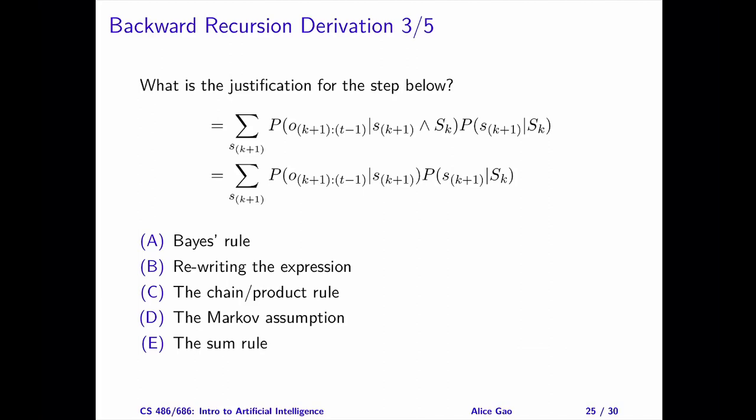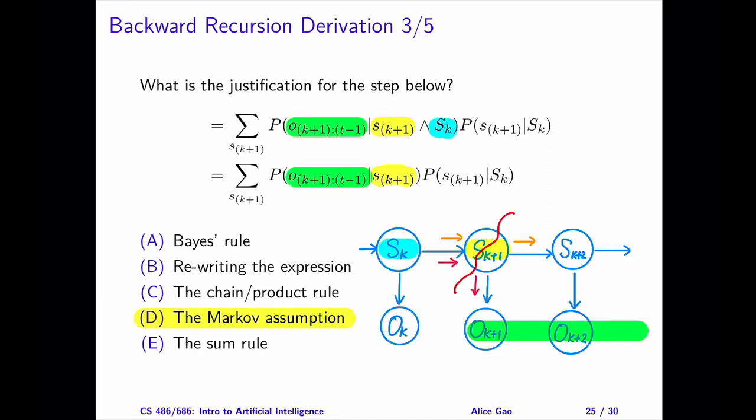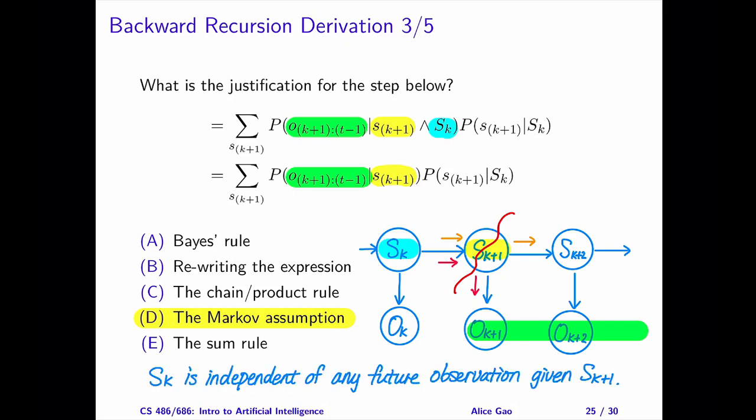Step 3. Pause the video and choose an answer. The correct answer is D, the Markov assumption. This step removes the value s sub k from the first term. This is another conditional independence relationship. Given the state on day k plus 1, s sub k plus 1, all the future observations are independent of the past state on day k, s sub k.